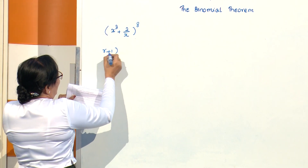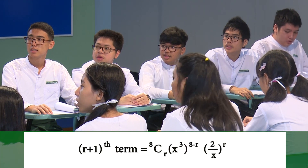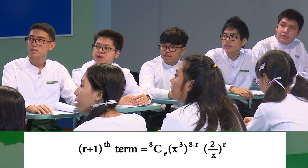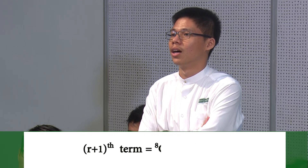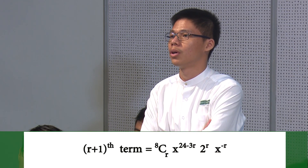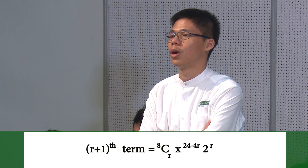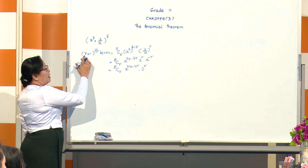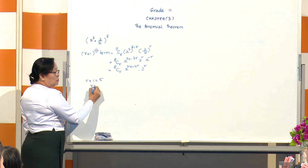The general (r+1)th term equals 8Cr times (x²) to the power (8 minus r) times (2/x) to the power r. This simplifies to 8Cr times x to the power (24 minus 4r) times 2 to the power r.